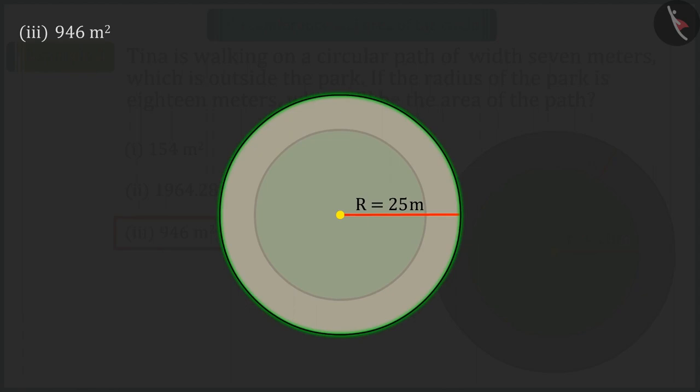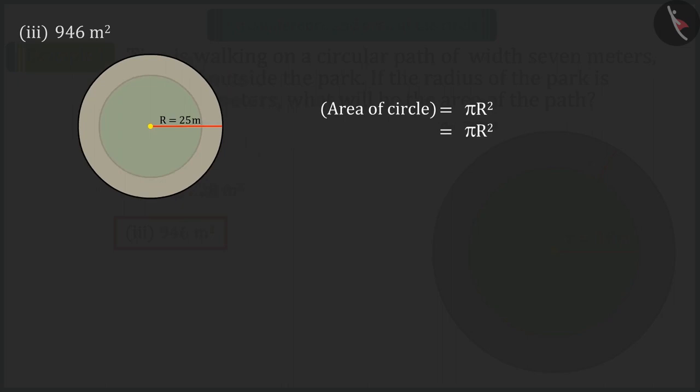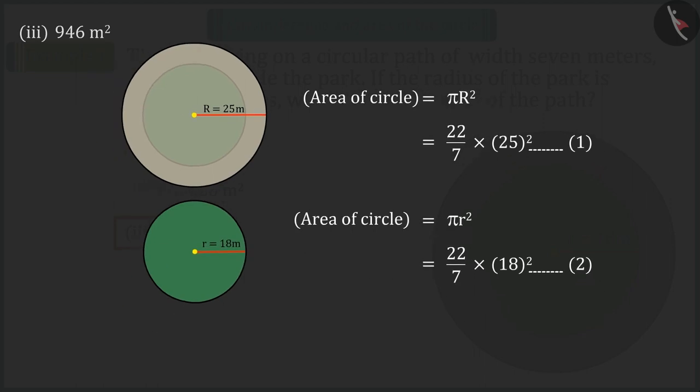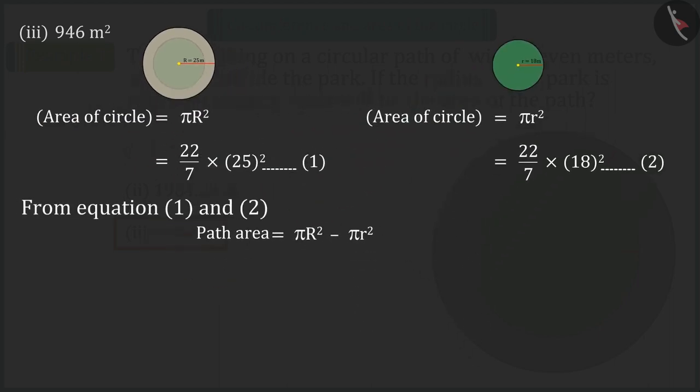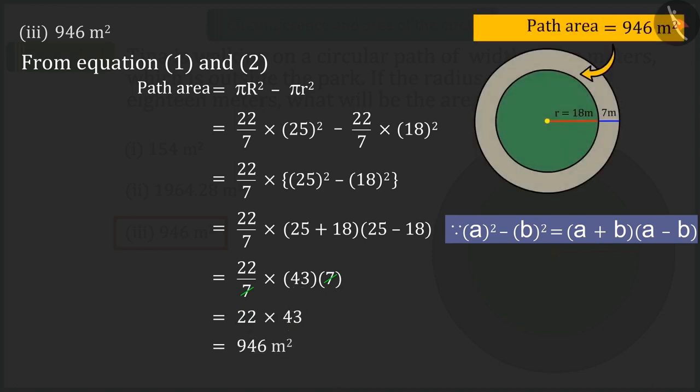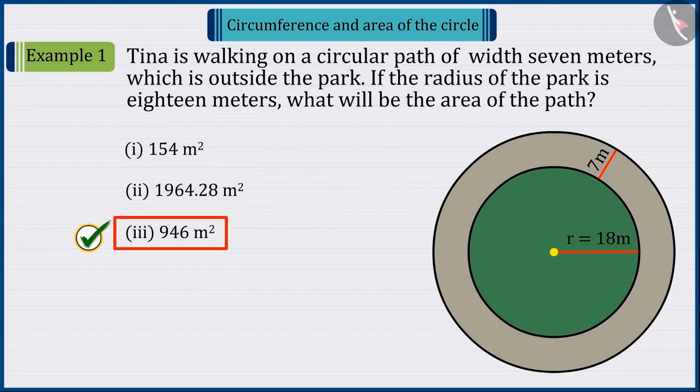First, we find the area of the whole circle, which is represented by equation 1. Similarly, find the circle with area of the park, which is represented by equation 2. Since we have to find the area of the path, so subtract from equation 1 the equation 2, which, when solved, gives the area of the path as 946 square meters. So, option 3 is the correct answer.